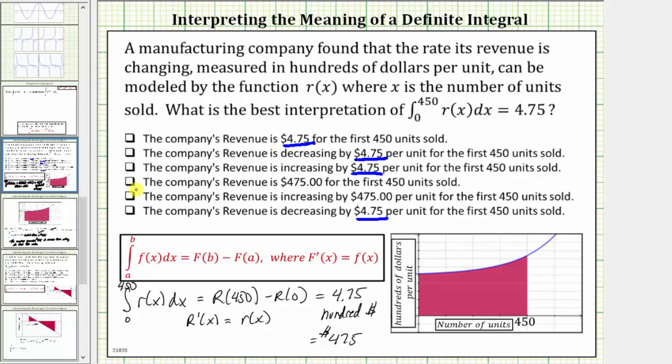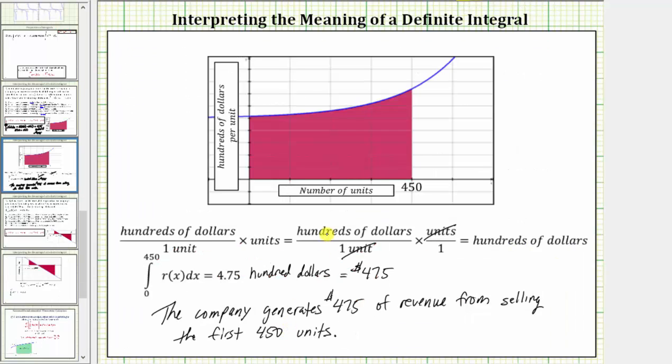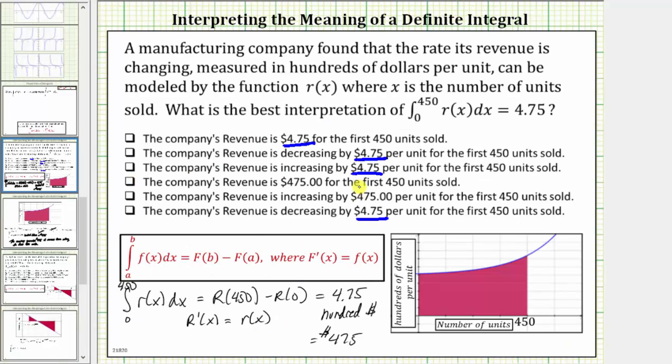Let's focus on these two sentences here. This reads the company's revenue is 475 dollars for the first 450 units, which is equivalent to the sentence we stated earlier on this slide here, which means this is the best interpretation.